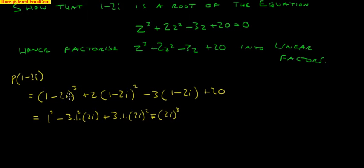I've done the negatives as I've gone along, because I've got 1 of them so it's negative, and then 2 so it's positive, and then 3 so it's negative. Then we expand the second part, plus 2 into 1 squared minus 1, 2 into 2i plus 2i squared. I'll actually multiply that out, so I'm going to get minus 3 plus 6i plus 20.